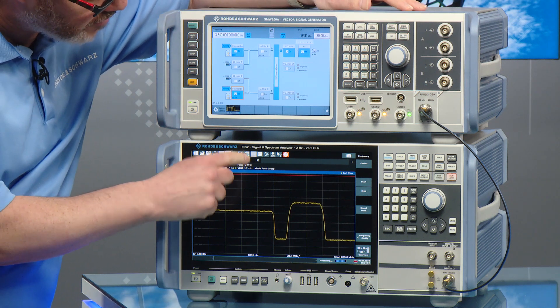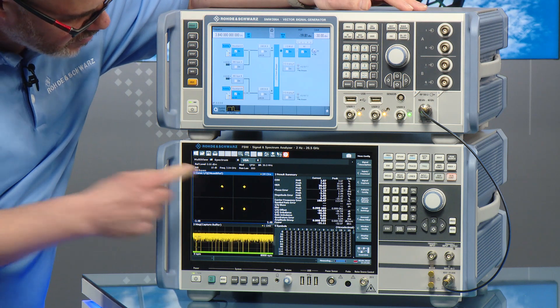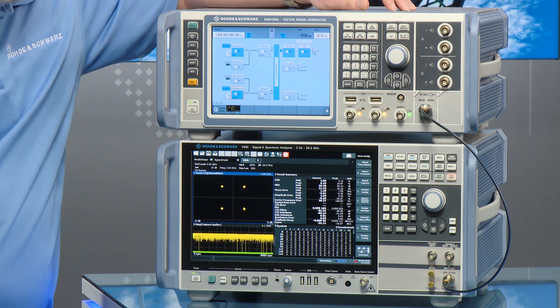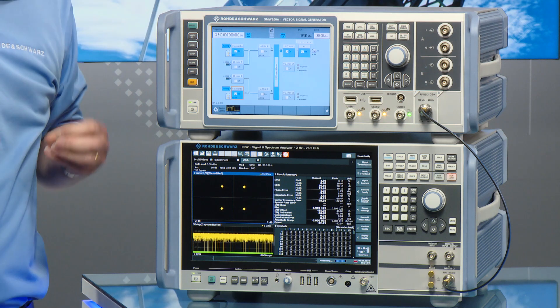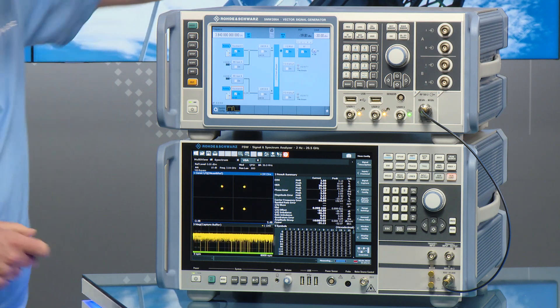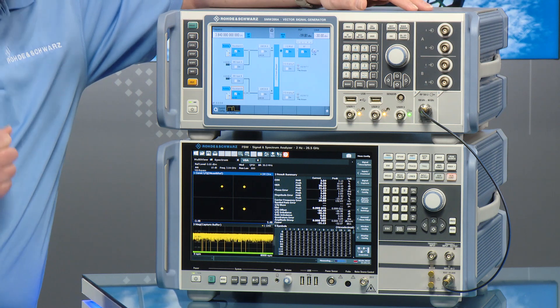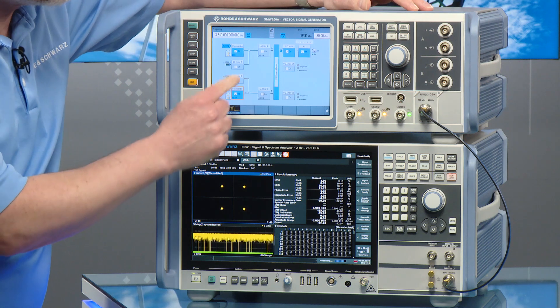We can go look at the EVM performance and you see the little clusters in the constellation diagram have got a little bit worse because there's more noise present. So that gives us an idea of how the performance is going to change.